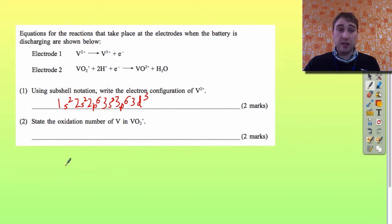The next part of the question says state the oxidation number of vanadium in VO2+. What I'm going to do is the working out down the bottom and write my answer at the top here.